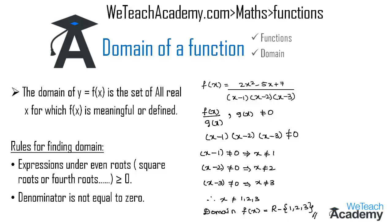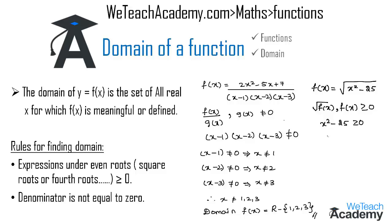Now let us consider another example: f(x) = √(x²-25). This is in the form √f(x), so f(x) is defined only when x²-25 ≥ 0. Since 25 = 5², we write x²-5² ≥ 0. Using the difference of squares formula a²-b² = (a+b)(a-b), this becomes (x+5)(x-5) ≥ 0.